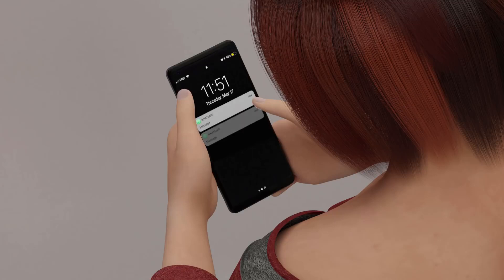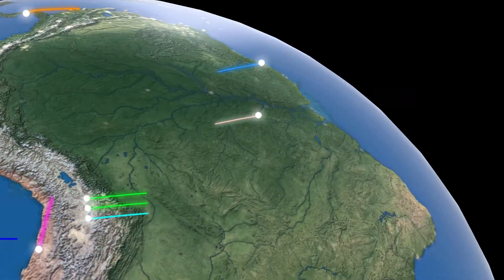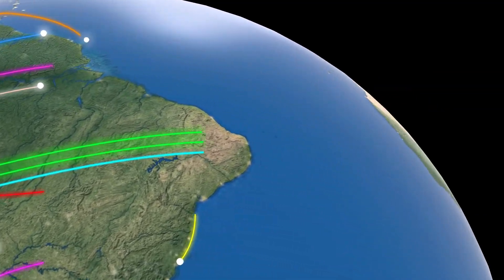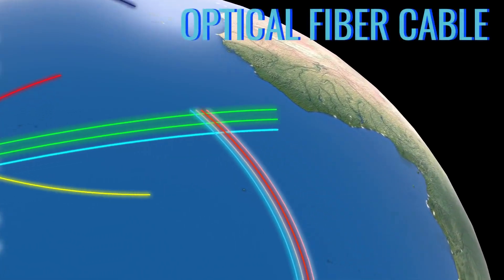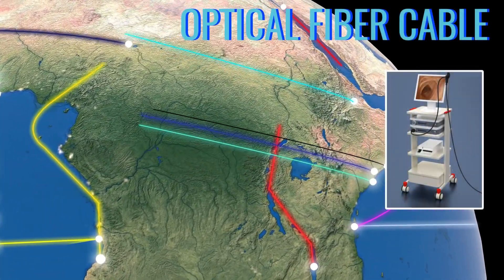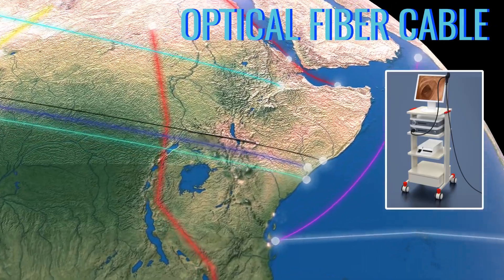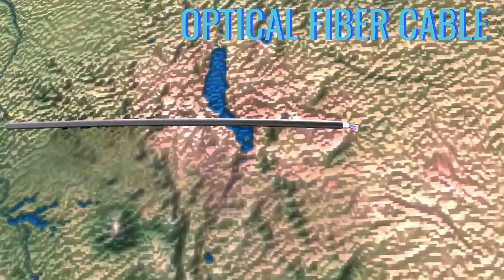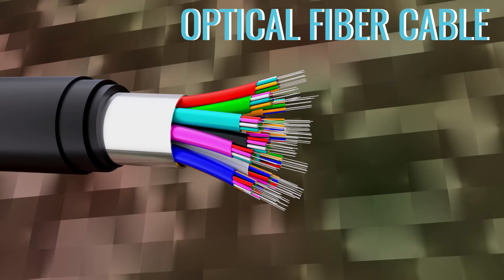Have you ever thought about how you get emails or any other information from any corner of the world within a blink of an eye? This has been made possible by a network of cables which are laid under the ground and below the ocean. The cables, which carry most of the world's data, are optical fiber cables. They are also used in medical equipment. Let's learn how optical fiber cables work and how they have revolutionized the world around us.